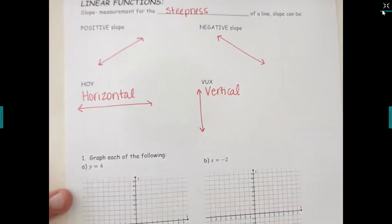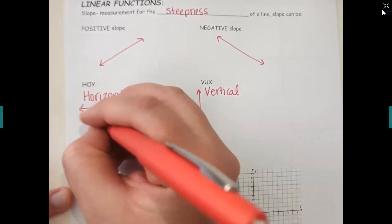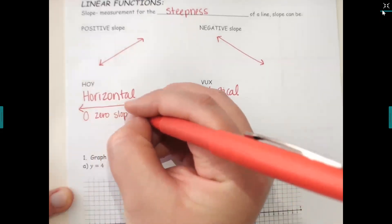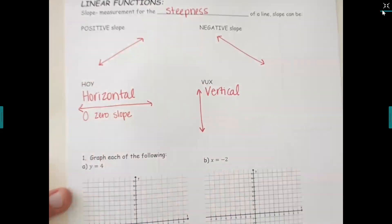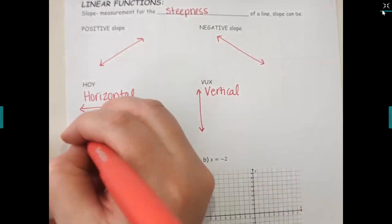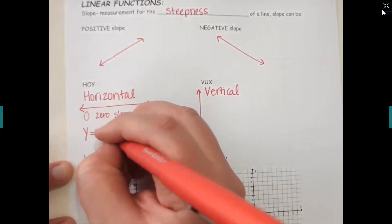HOY stands for horizontal line, and the O is actually a zero for a zero slope. If you have a line that's flat across, it doesn't count as positive or negative — it counts as a zero slope, and then your equation is going to be y equals and then a number.